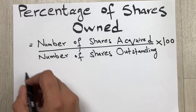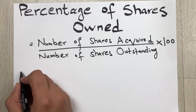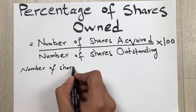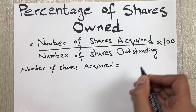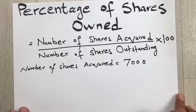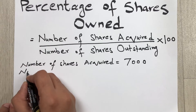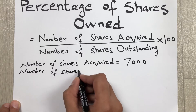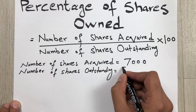Now let's say you acquired 7,000 shares, so the number of shares you acquired equals 7,000. And the number of shares outstanding are 50,000. So now we have both values.